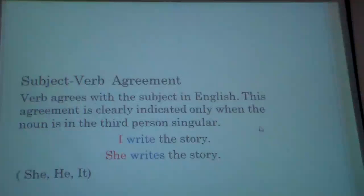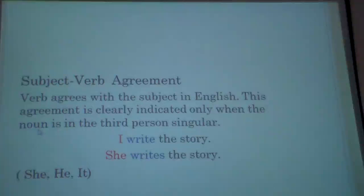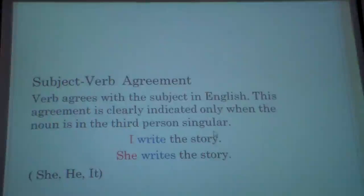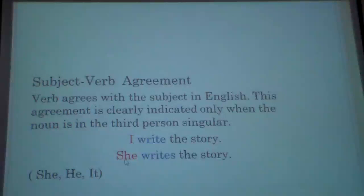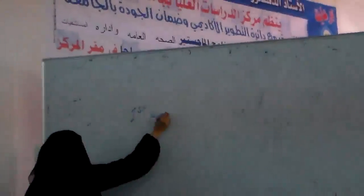Then we talked about subject-verb agreement: the verb agrees with the subject in English. This agreement is clearly indicated only when the noun is in the third person singular. For example, 'I write' has no -s, but 'she writes' uses the number marker -s. So to indicate number, we have first person, second person, and third person.